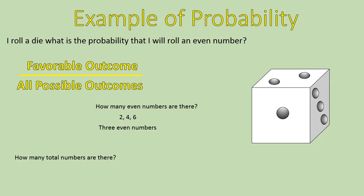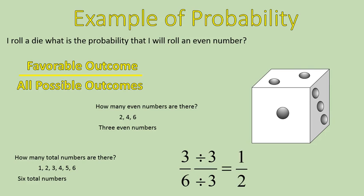How many total numbers are there on a six-sided die? One, two, three, four, five, six — there are six total numbers. So the probability of rolling an even number is three out of six, and I can reduce that down to one-half. In other words, the probability of rolling an even number is one-half. I can either roll two, four, or six, and the other things I could roll would be three, five, and one.